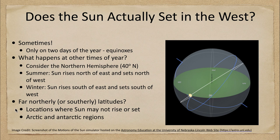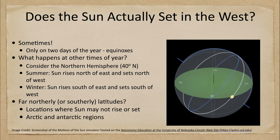In the winter it's just the opposite — the Sun will rise south of east and set south of west. We can see that here as well: there is the Sun, there is the west point, and the Sun is setting a little bit to the south of west, not exactly west.